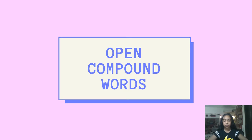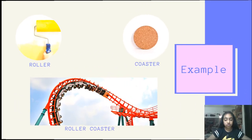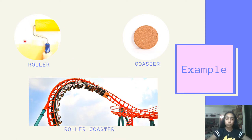First of all, what are open compound words? Open compound words are compound words written as two separate words but set together as one word with its own meaning. For example, roller is a separate word and coaster is a separate word — each with their own separate meanings. Now, when we put roller and coaster together as one word, it makes roller coaster, which has its own meaning. We took two words with their two separate meanings, put them together, and it makes a new word: roller coaster.